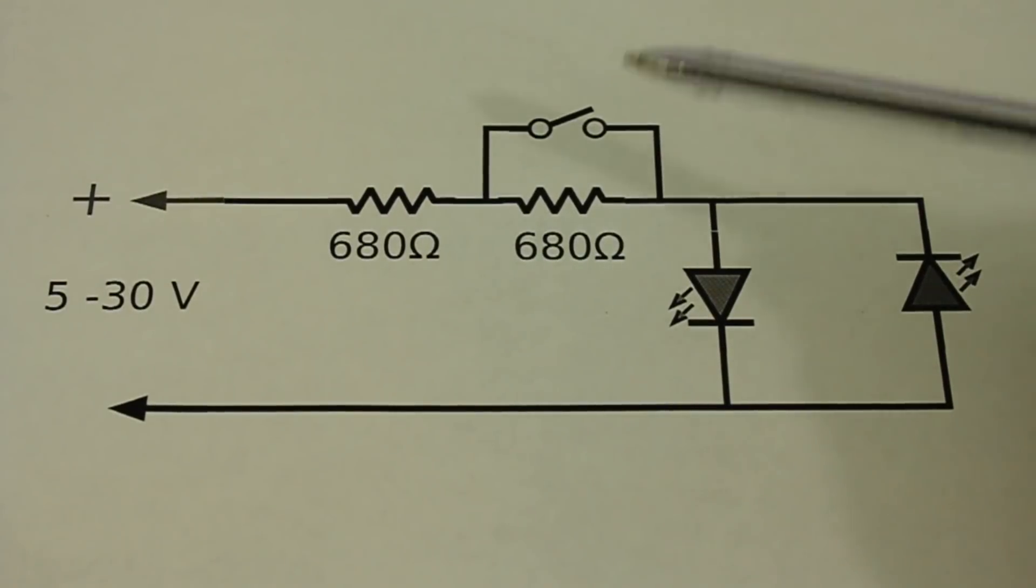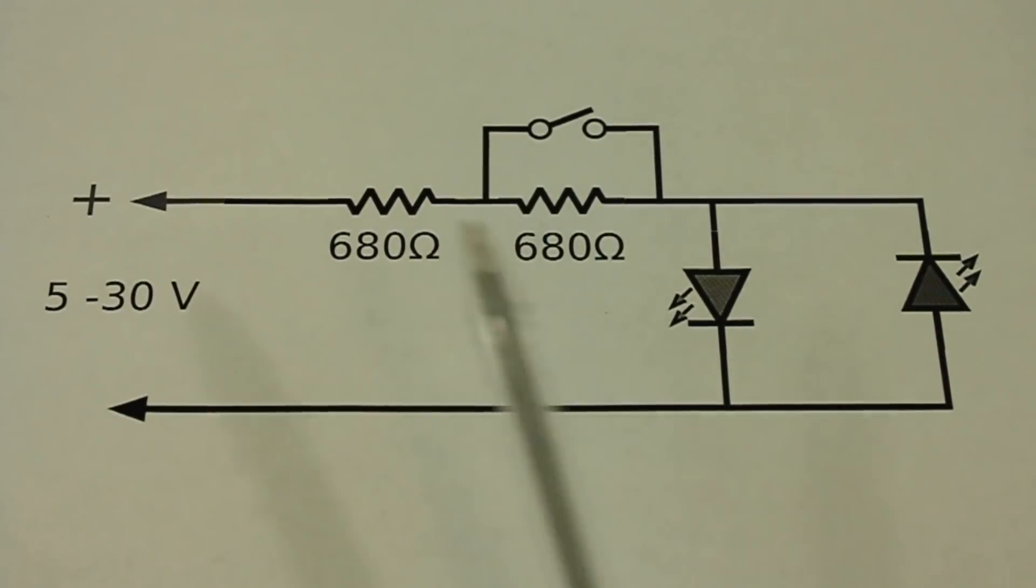With the switch open we have a total resistance of 1360 ohms and we can test voltages of up to 30 volts. If we close the switch this resistor disappears and we only have 680 ohms and we can test voltages of up to 15 volts.